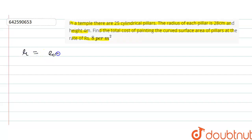So we have r equals radius of cylindrical pillar, that is 28 centimeters, then 28 upon 100 meters. Then h equals